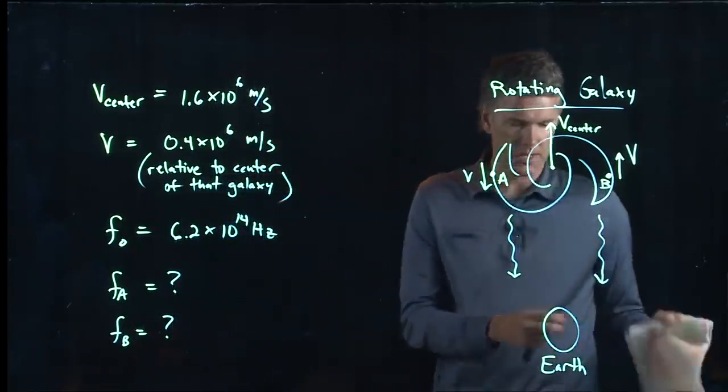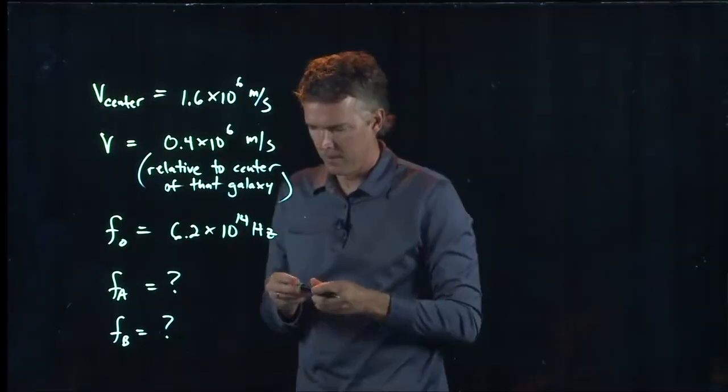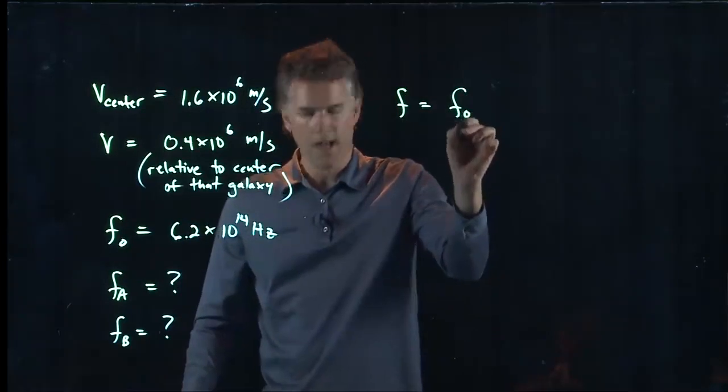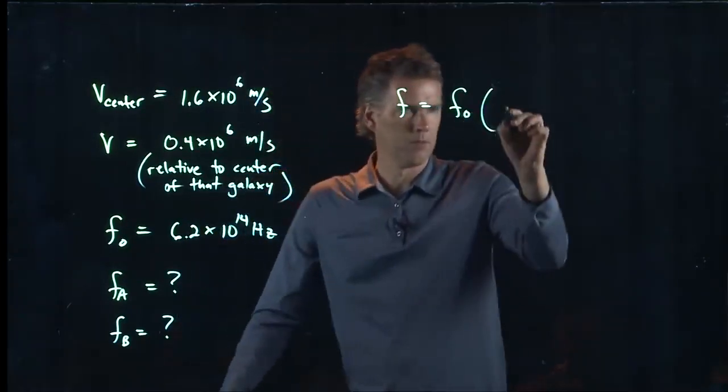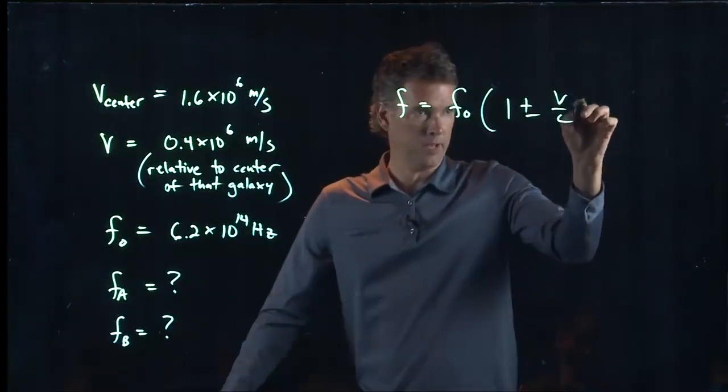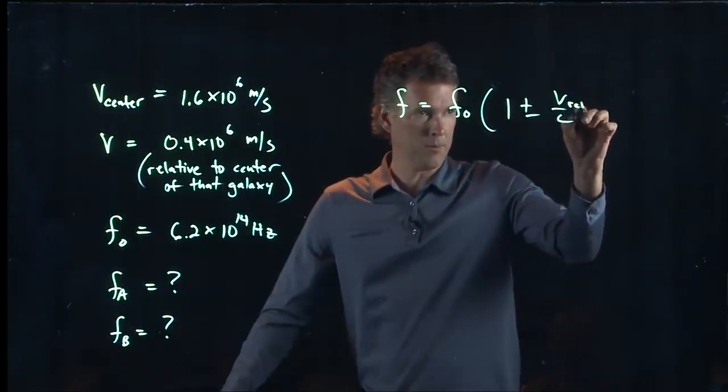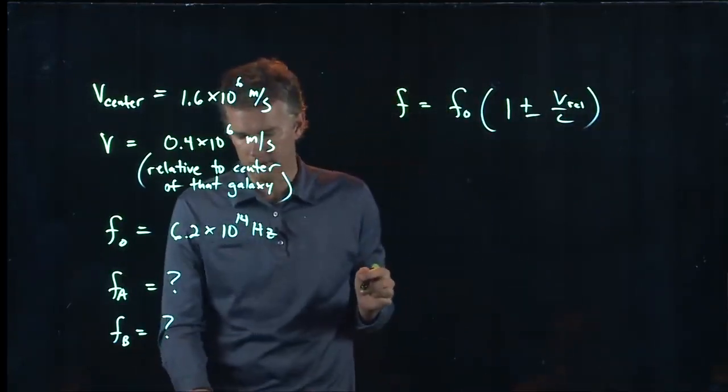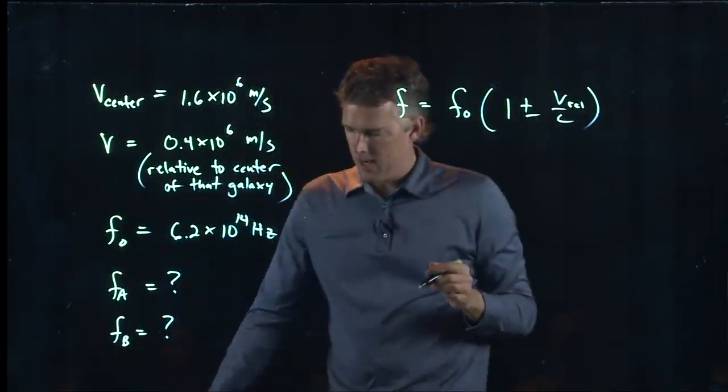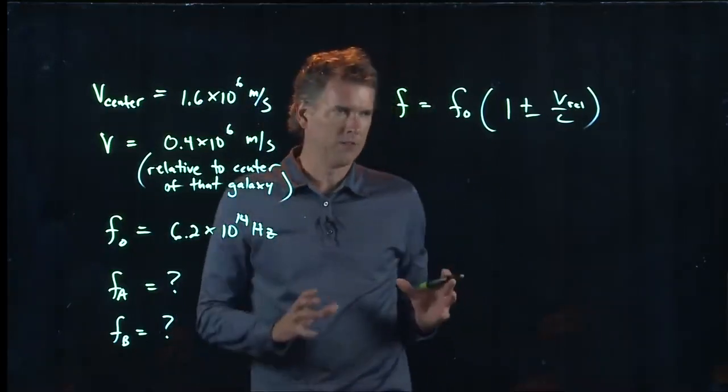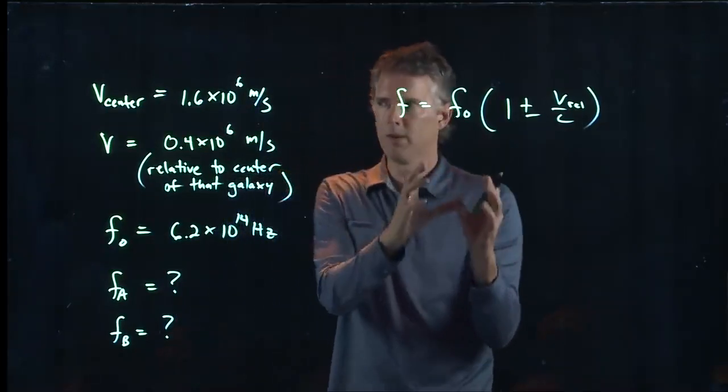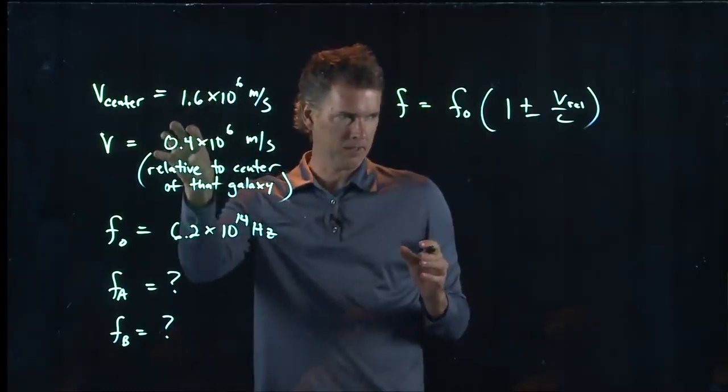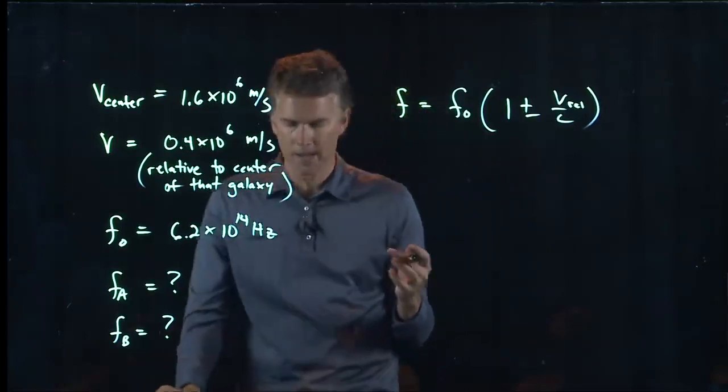Okay, so we go back to the Doppler shift. So the Doppler shift we said was F equals FO times 1 plus or minus V over C. But remember that is relative to us. Okay, so we're going to label that V relative. And the whole galaxy is moving away from us.